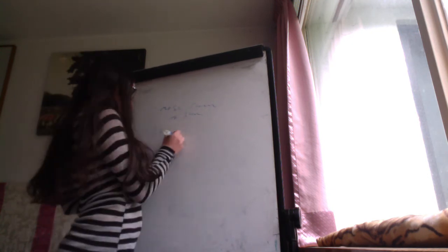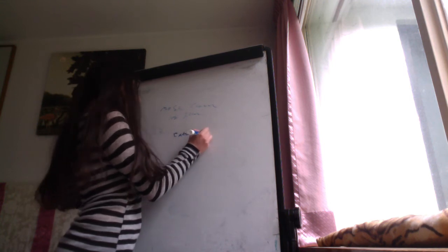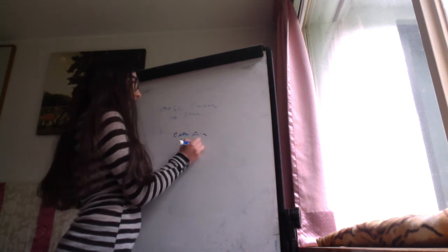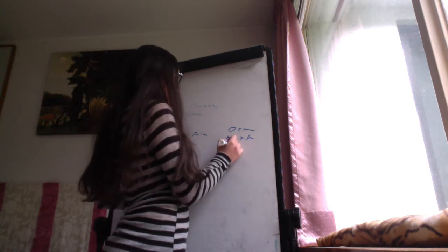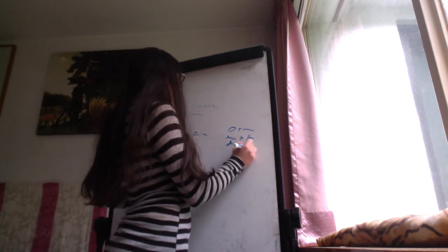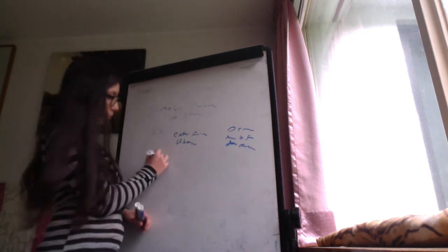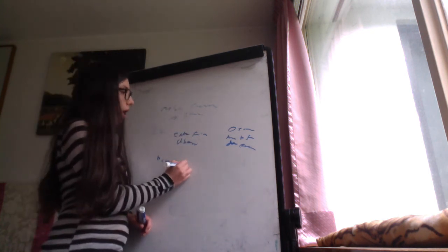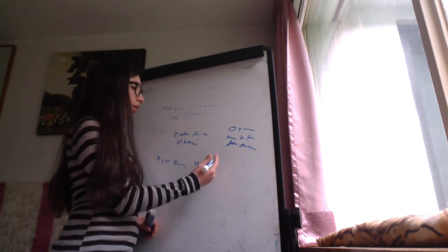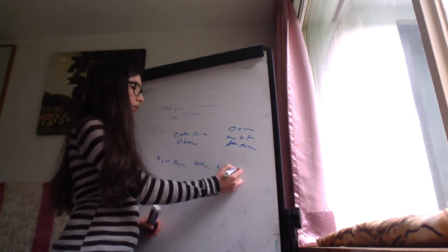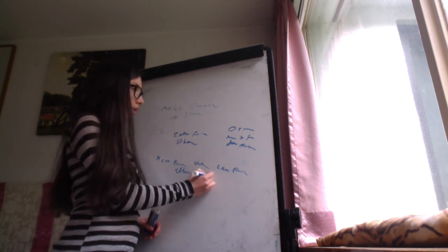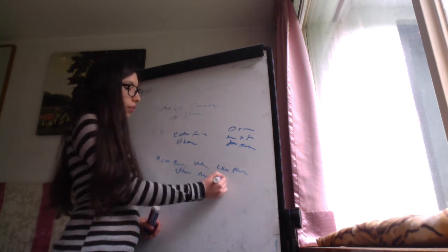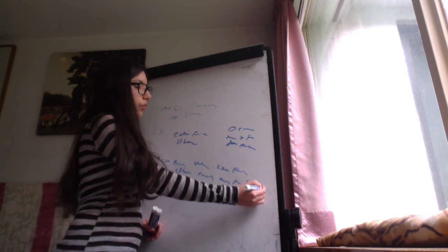The C7 nerve root has the myotome of extension of the fingers and elbow, and the dermatome is the middle finger and dorsal forearm. So the patient will present with neck pain and weakness at the extension of the fingers and elbow, plus numbness at the middle finger and dorsal forearm.